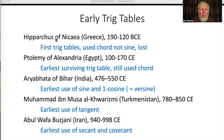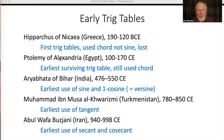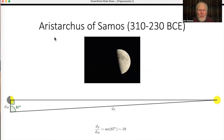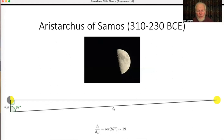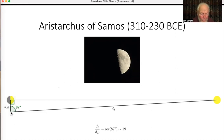I'll finish with what I believe is the very first trigonometric calculation. This is Aristarchus — almost a contemporary of Euclid, and quite a bit before Hipparchus, so he didn't have trig tables to work with. He was trying to find how much further the sun is than the moon. His clever idea was to look at the moon at first quarter and judge when the terminator — dividing light from dark — was exactly straight. He worked out that meant the angle from him to the moon to the sun was a right angle, and the ratio of sun distance to moon distance would be what we'd now call sec 87°. He got about 19, which is roughly right.